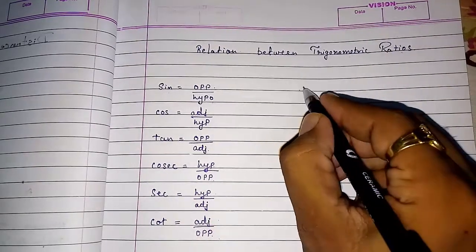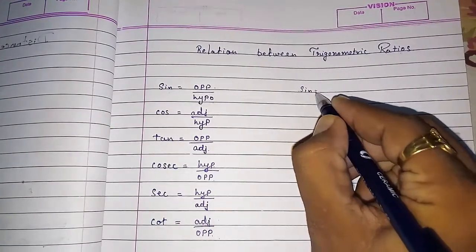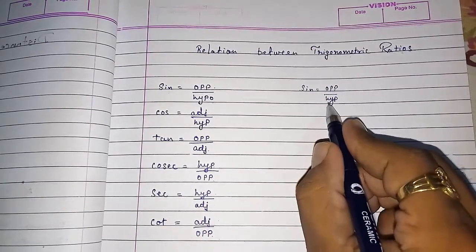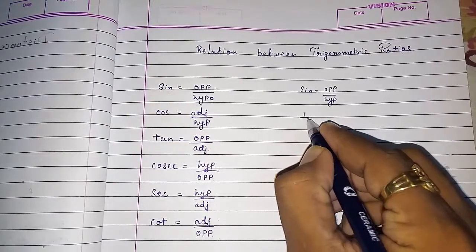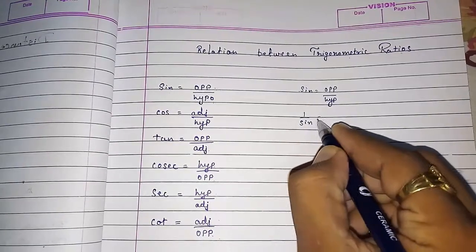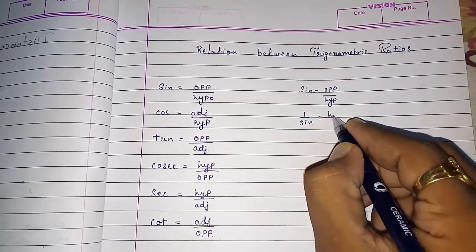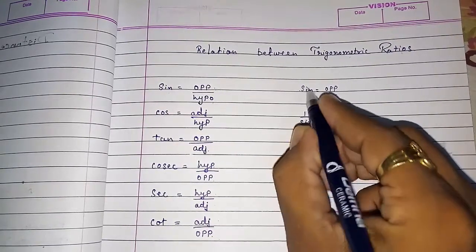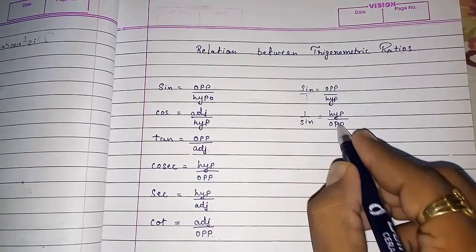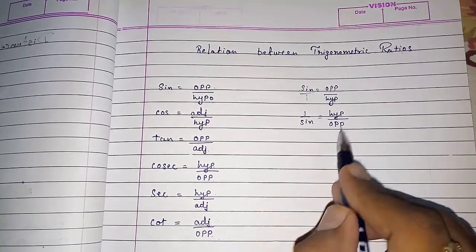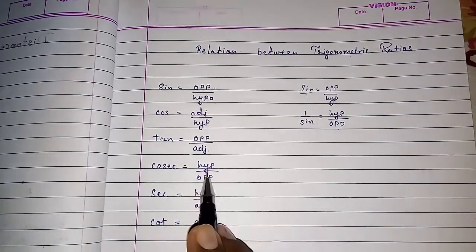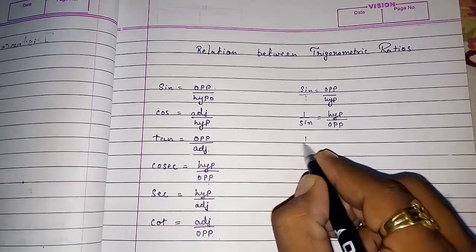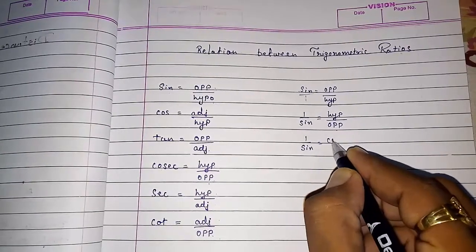So if I write sin opposite by hypotenuse or if I want to do reciprocal one by sin will give you reciprocal of this then it will become hypotenuse upon opposite. So I had done reciprocal of this and this will be also reciprocal. So one by sin gives you hypotenuse by opposite. So look here hypotenuse by opposite gives you cosec. So I can say one by sin is equal to cosec.